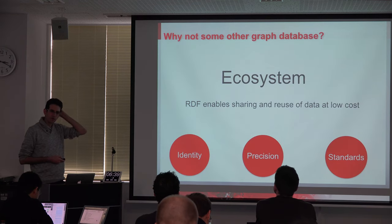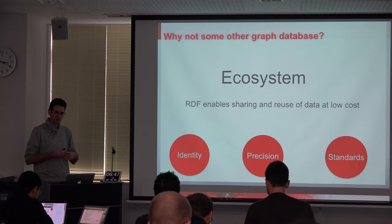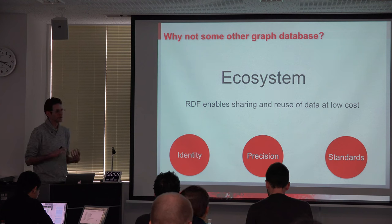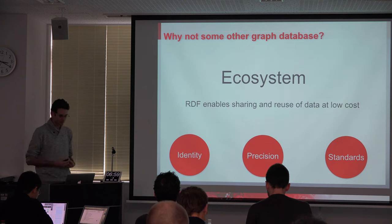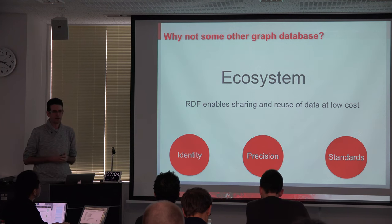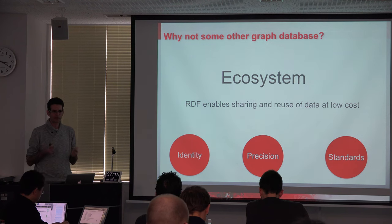People ask: why are you using RDF and SPARQL? Why don't you use Neo4j, Titan, or some other fancy graph database? It's very simple — none of these have an ecosystem. They have commercial ecosystems, they have user ecosystems, but you don't have data ecosystems. There's no standardized way to pump data into both Neo4j and Titan. You still end up with yet another data warehouse — it's a graph data warehouse, but it's still a data warehouse. There's no connection between them, no federation. Federation can only be enabled by the sys admins, which means a lot of administration overhead and means lots of things don't happen.